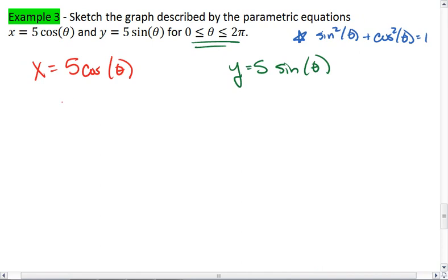First things first, I'm going to square both sides. Actually, I'm going to solve this side for cosine theta. I get cosine theta equals x over 5, and now I'm going to square both sides. I get cosine squared equals x squared over 25.